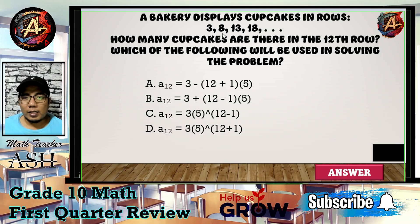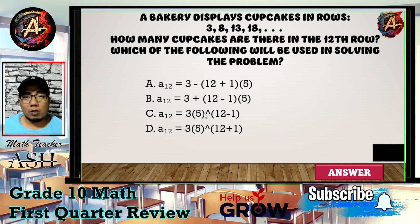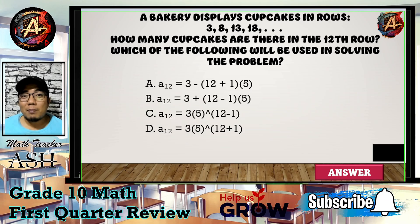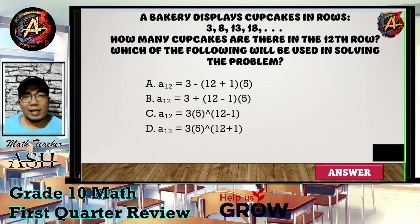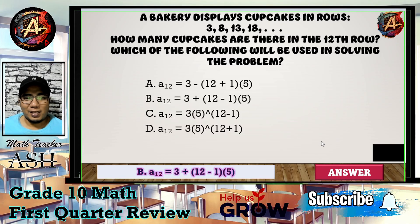First, check the sequence: it increases by 5, so it is arithmetic and uses a common difference. Letters C and D are wrong because they use multiplication. For A and B, the formula is aₙ = a₁ + (n-1)×d, which uses (n-1). Therefore the correct answer is letter B.